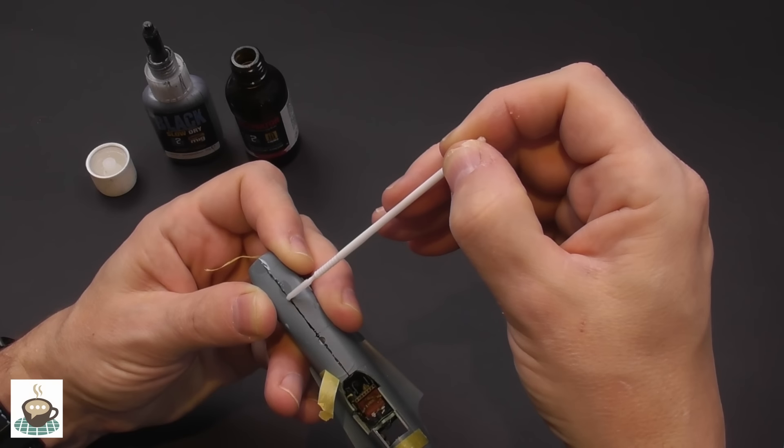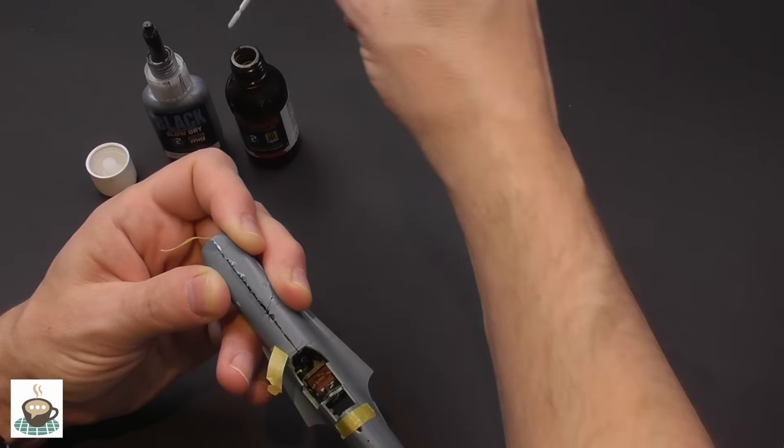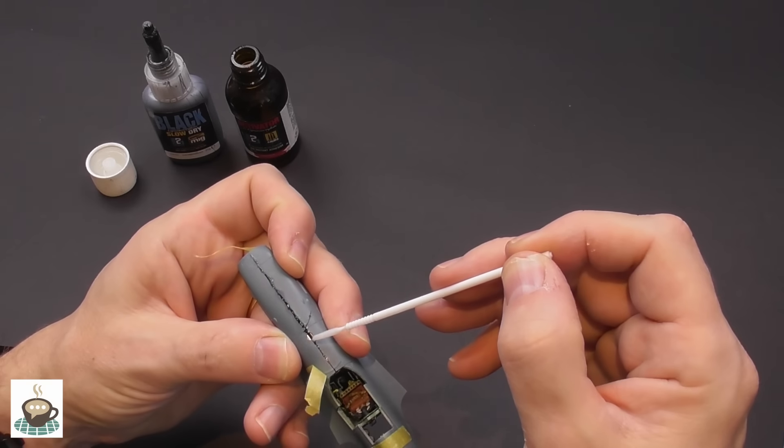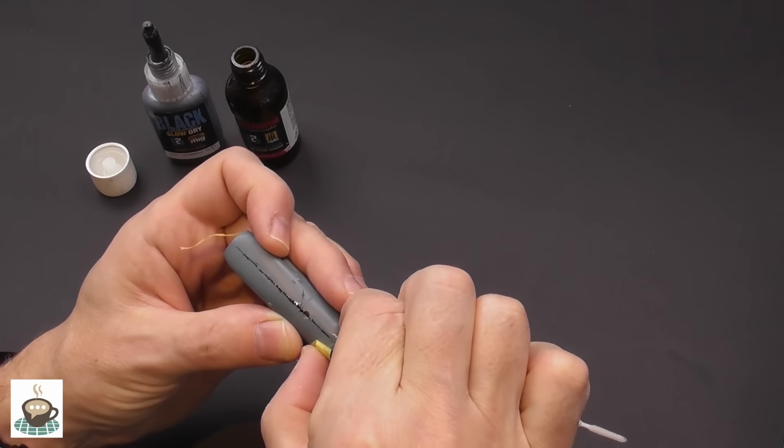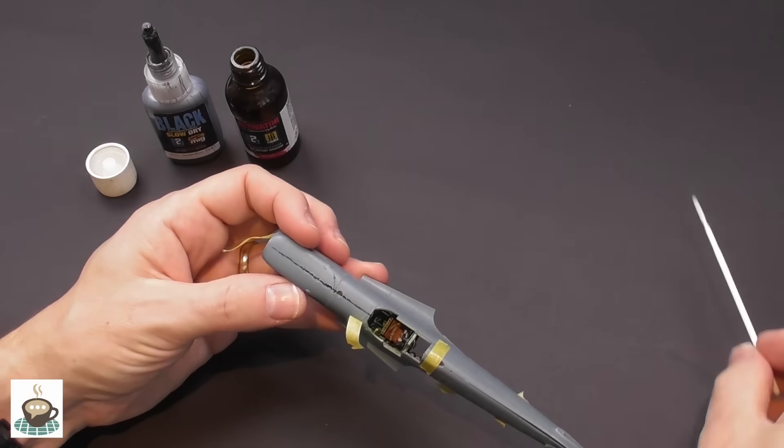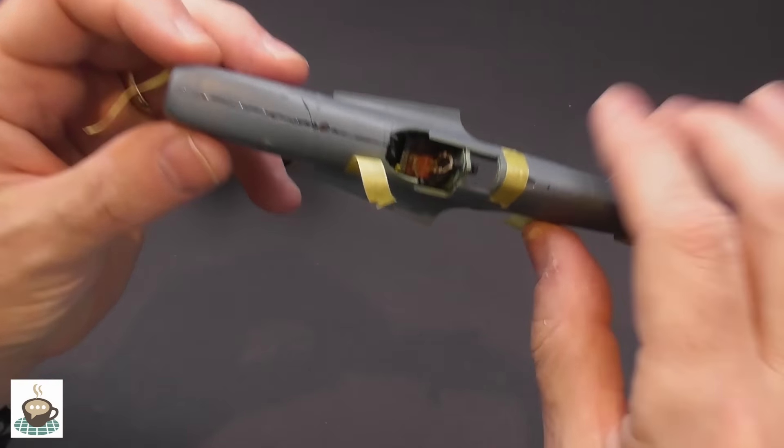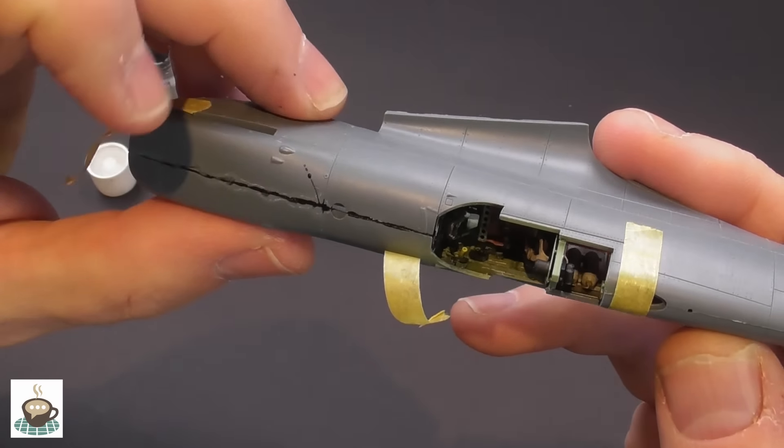The super glue I'm using is Ammo's, it has some working time so it's not going to bond instantly. You do have that time to make sure everything's aligned, but hitting it with the accelerator means that it'll go off within a few seconds and there you can see that is now dry.